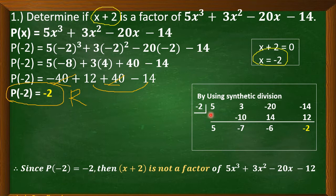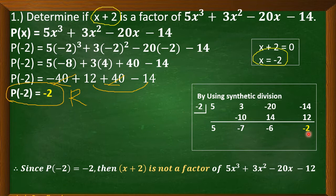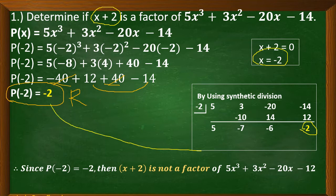I also have the solution using synthetic division. As you can observe, we also have here a remainder equal to negative 2. So we can also use synthetic division to determine whether the binomial is a factor or not. Since there is a remainder, the binomial x plus 2 is not a factor. Both methods give the same value, negative 2.